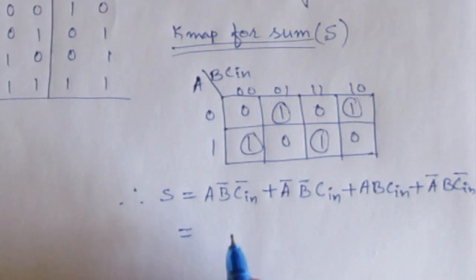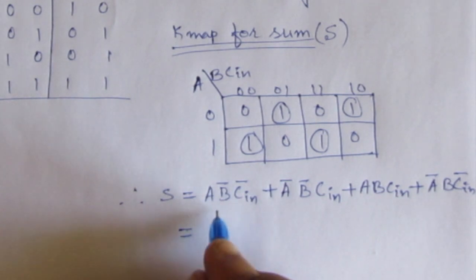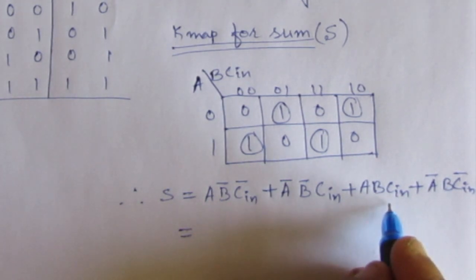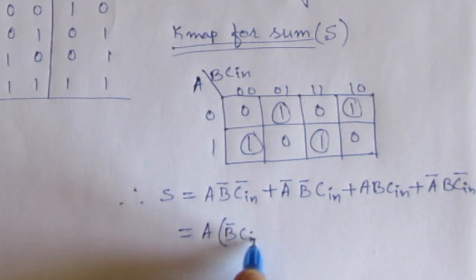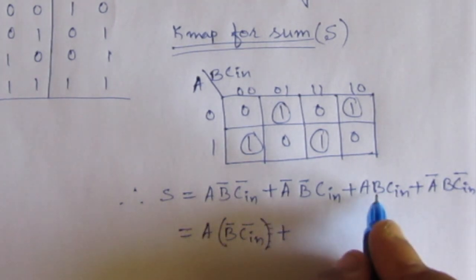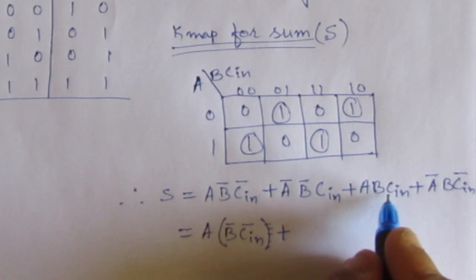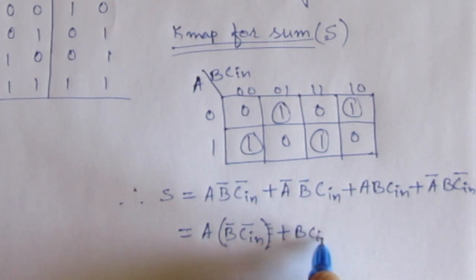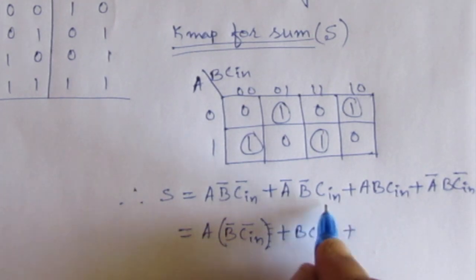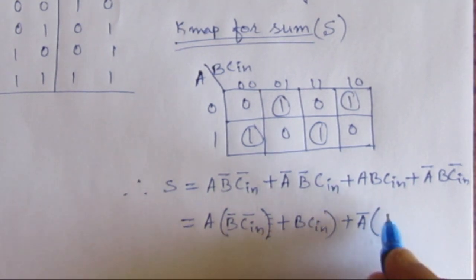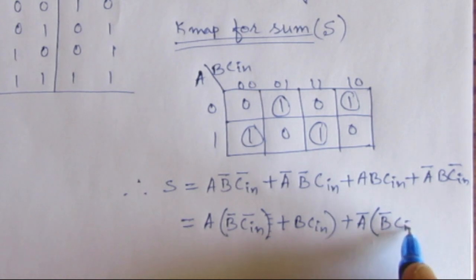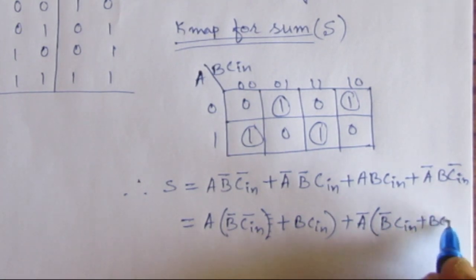From here we can minimize this. Consider the first and third terms — we can take A as common, so we get A(B̄·C̄-in + B·C-in). From the second and fourth terms, we can take Ā as common, so we get Ā(B̄·C-in + B·C̄-in).